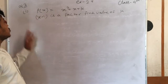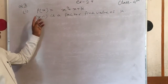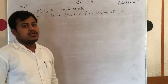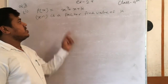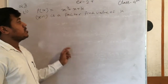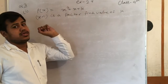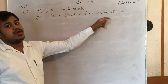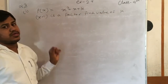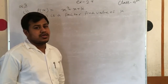Now we start question number 3. The polynomial is x squared plus x plus k. We will find the value of k, given that x minus 1 is a factor.